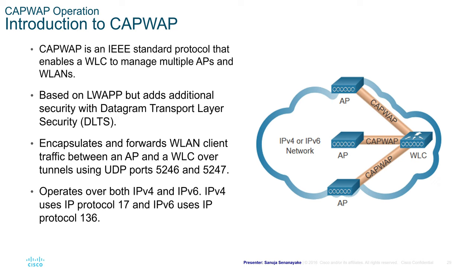Introduction to CAPWAP. CAPWAP is an IEEE standard protocol that enables a WLC to manage multiple APs and WLANs. It is an international IEEE standard — as opposed to a proprietary standard — that allows managing multiple APs connected to a WLC.